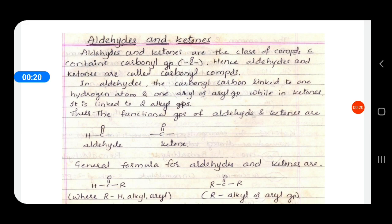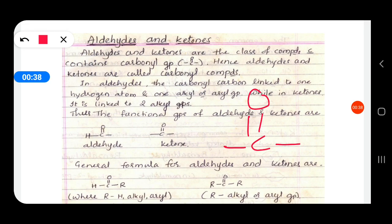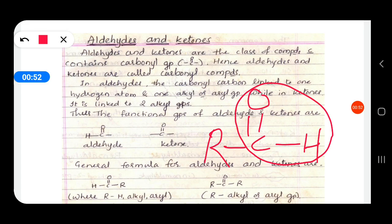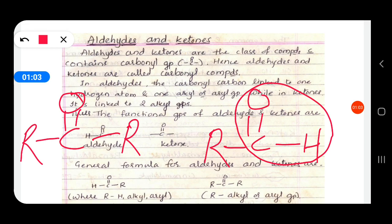Both aldehydes and ketones are collectively called carbonyl compounds, that is they contain C double bond O. In aldehydes, on one side of the C=O a hydrogen is present and on the other side an R group — any alkyl or aryl group — so this is called the aldehyde group. In ketones, the carbonyl group has two groups attached on both sides, which may be the same or different alkyl or aryl groups.